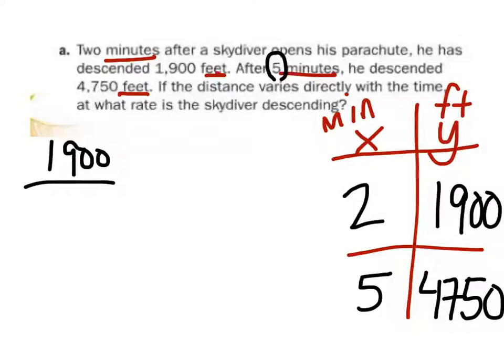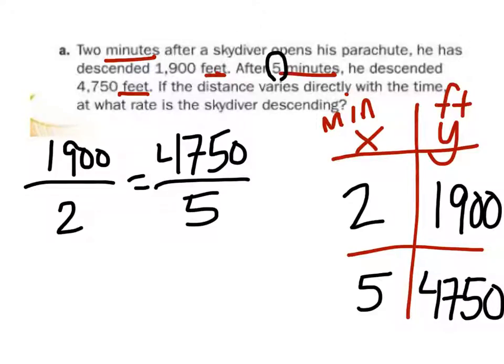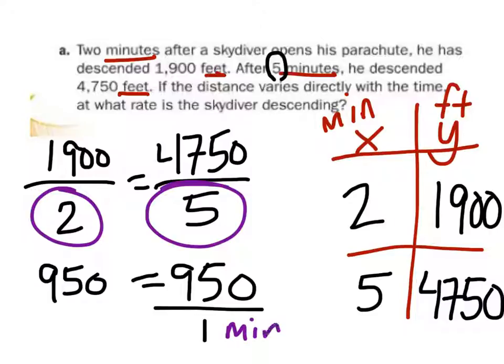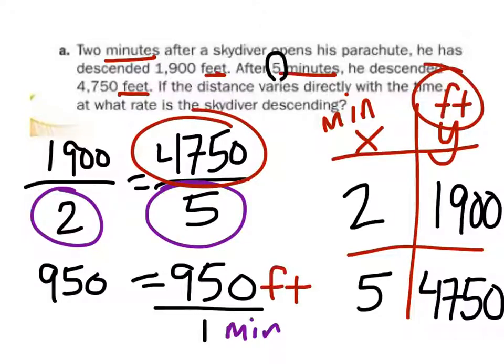So, let's find out. 1,900 over 2. Does this equal 4,750 over 5? Well, this would give us 950. And this would be 950. Are they equal? Yeah. So, it is a direct variation. What is the rate? Well, this is the rate. 950 over 1, right? Well, we just need to label this. The X values are on the bottom, so the 1 would be represented by minutes. The Y values are on top, which are represented by feet. So, there's our rate.